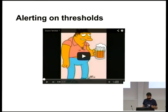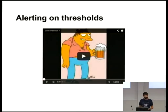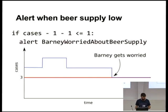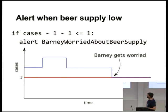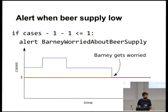If you're familiar with The Simpsons, there's a scene where Barney becomes worried about the beer supply and says 'after this case and the next case, there's only one case left.' Barney is basically a simple check-and-alert model: if the number of cases of beer minus one minus one is less than or equal to one, then Barney becomes worried. This is a very traditional alert — we have a threshold and we check at a point in time: is Barney worried or not? After some point t, yes he is; before that, he wasn't.